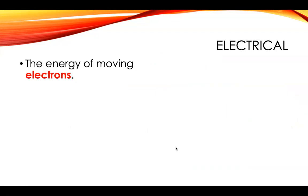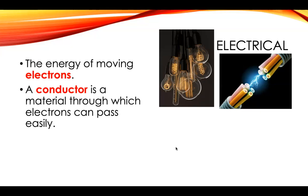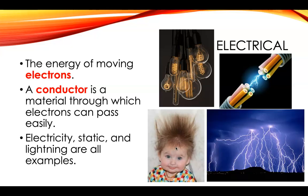Electrical energy is the energy of moving electrons. So it's specifically about electrons, no other part of the atom. Conductors are materials through which electrons can pass easily. So the electricity that we're familiar with in our homes is an example of electrical energy, as well as static and lightning.